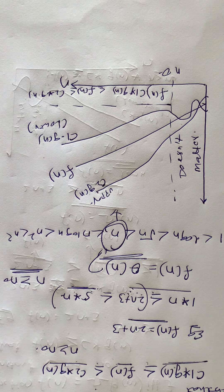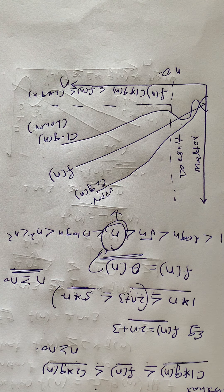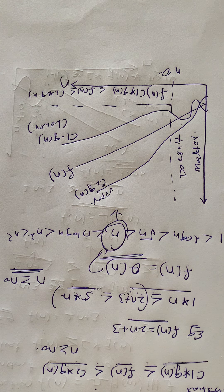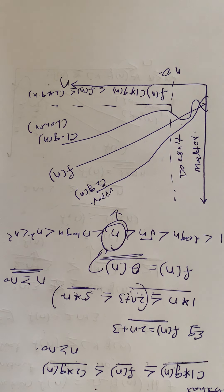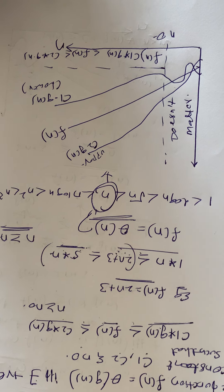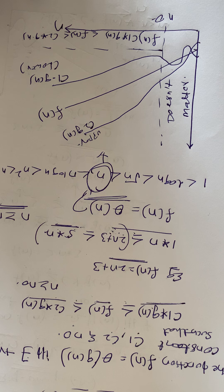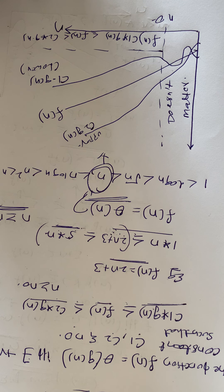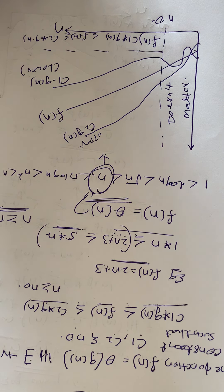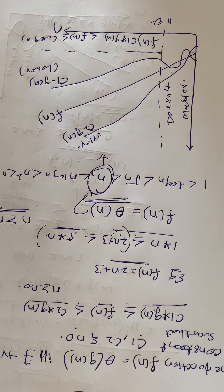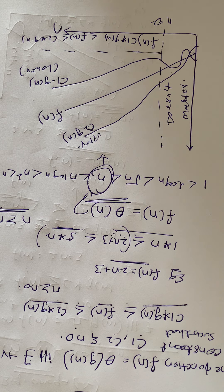These are the topics discussed in today's class: Big Theta, Big Omega, and from the previous session, Big O. These three asymptotic notations are very important for examinations and competitive exams. In the next session, we will discuss examples related to asymptotic notation, and later we will cover best case, worst case, and average case. If you have any doubts, please message me in the comment box. Please subscribe to my channel for more updates. Thank you one and all.